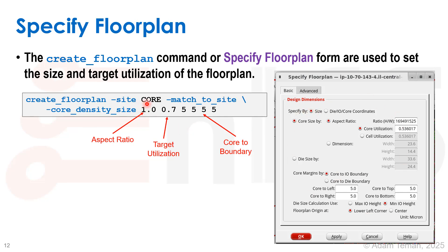Starting with what site is used: the 'match to site' option makes sure the actual size is a multiple of the site — both height and width — which helps with different DRC checks. Then we have the core density size, which is the main command that specifies the aspect ratio and the target utilization of the floor plan. This sets the size according to the estimated area of the standard cells after synthesis.